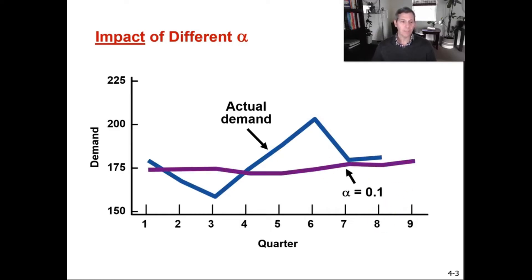if you pick an alpha that's close to zero, all it's doing is taking this average. So you're going to be off in quarter three, you're going to be off in quarter six, but in general you're okay because you're just taking an average. So with an alpha close to zero, you're smoothing it out, you're making it pretty much an average.